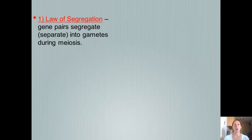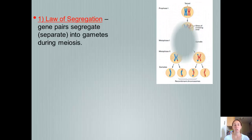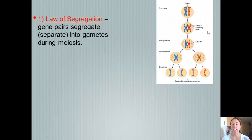The first law is the Law of Segregation. Gene pairs segregate into gametes during meiosis — they separate during meiosis. As you've already learned about meiosis, this diagram shows the phases of meiosis, and at the end is when the genes separate into four gametes.